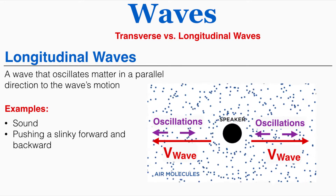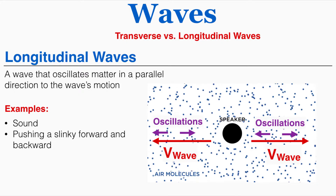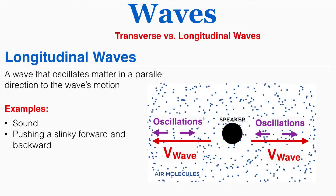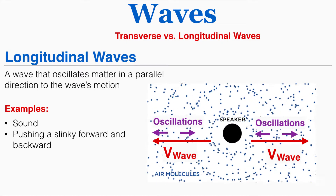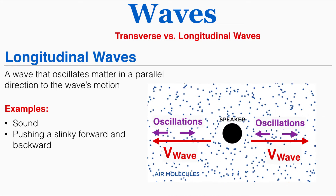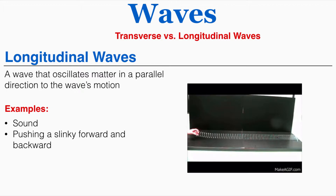The particles on the left and right of the speaker oscillate left and right, and in the up or down direction where the wave is moving up or down, the particles there are also moving up and down — always parallel to the direction of the wave. Slinkies are also useful for creating longitudinal waves because you can push them forward and back to create this wave pattern, so that's another example of a longitudinal wave.